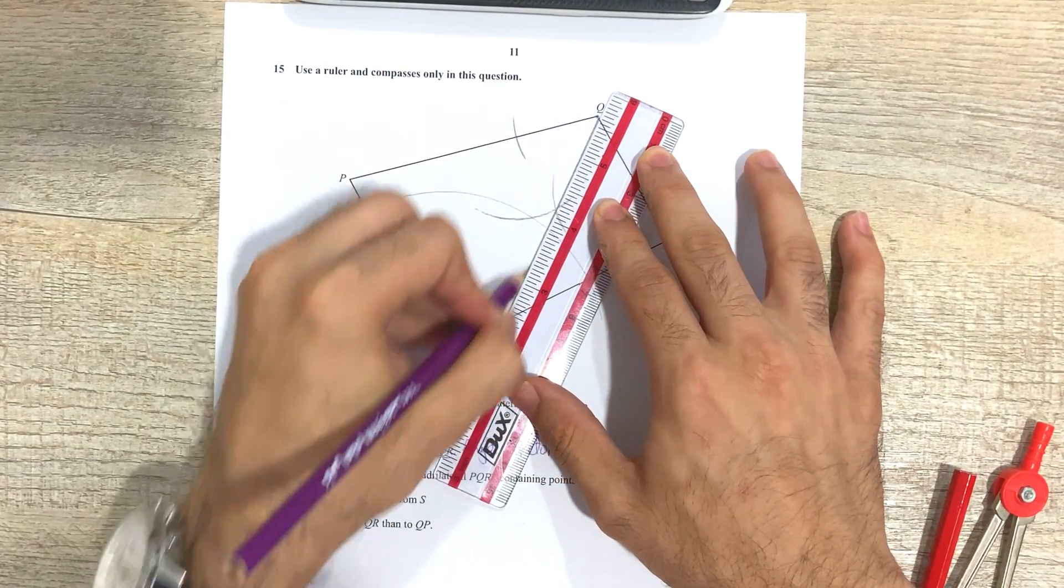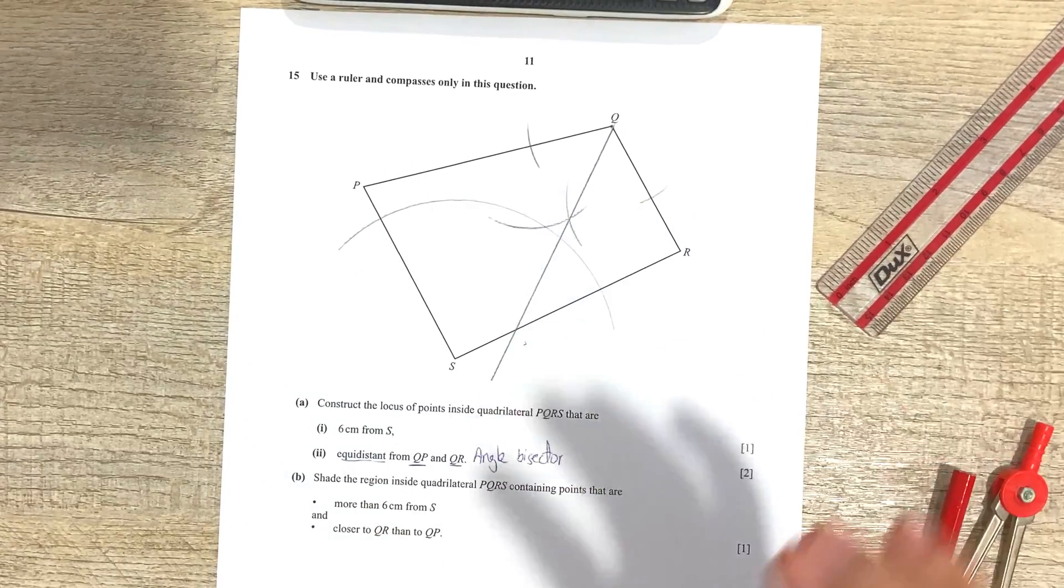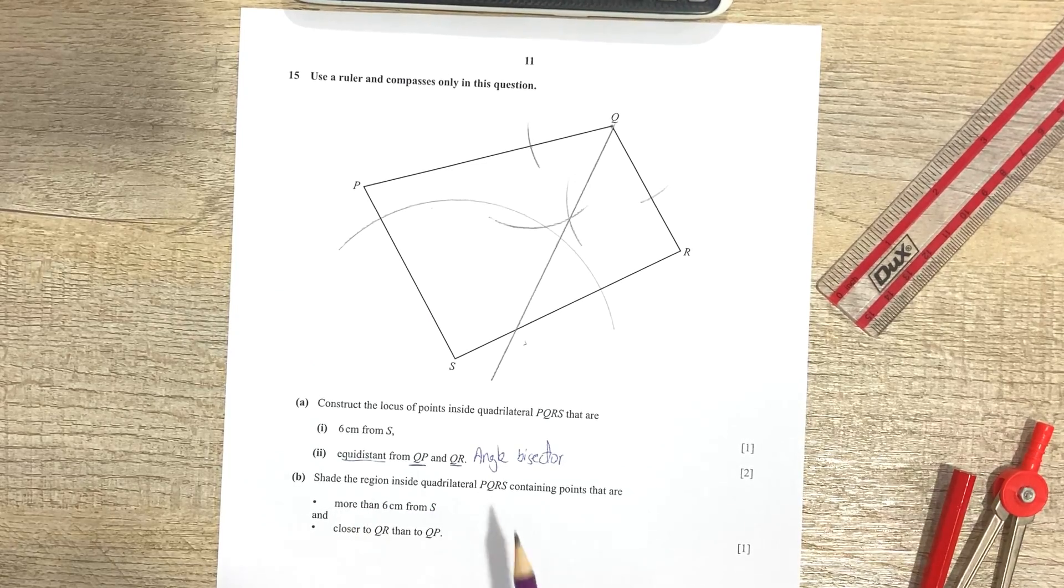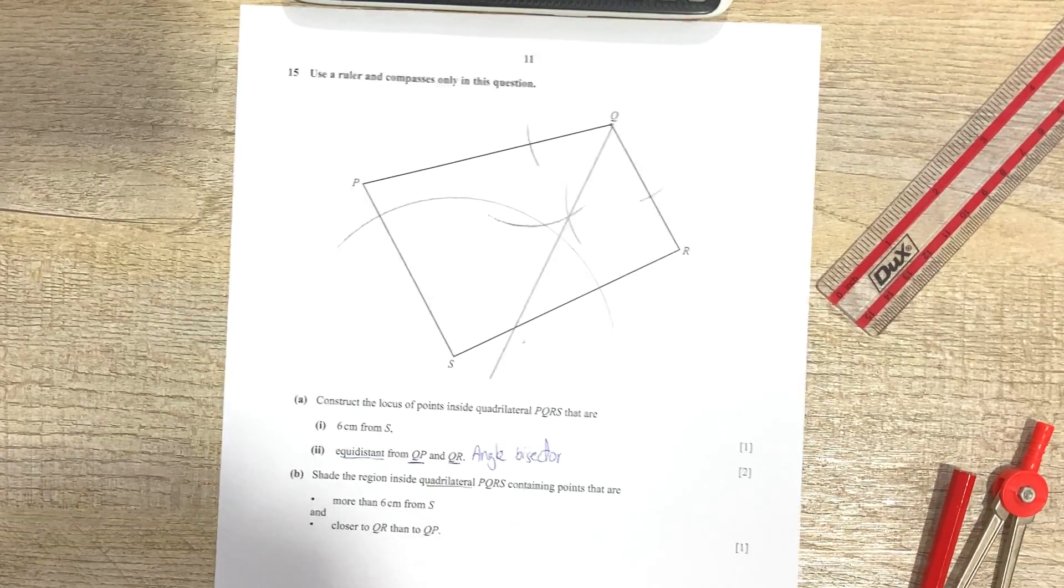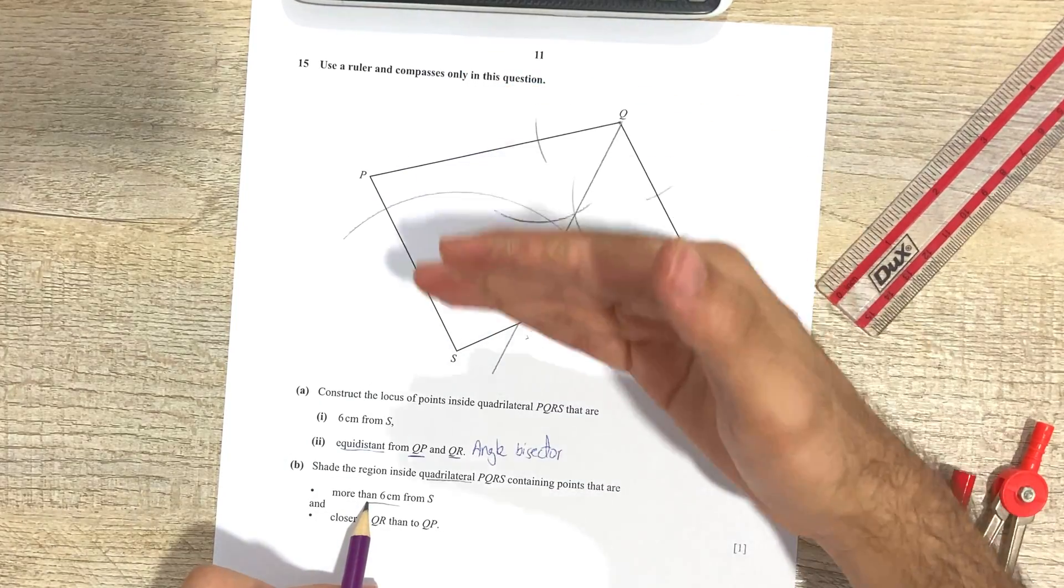And there you go, extend it so that it covers the entire quadrilateral or whatever shape it is that's in the question. Okay, then once that is done, it says here shade the region inside quadrilateral PQRS containing points that are more than six centimeters from S. So that means that region is going to be beyond this arc that I've made.